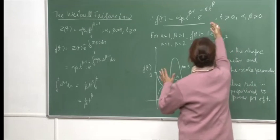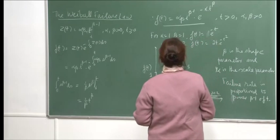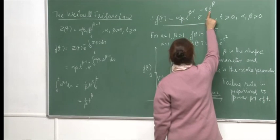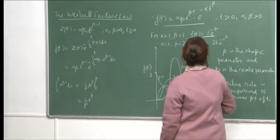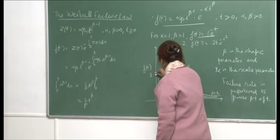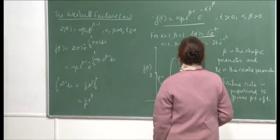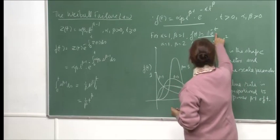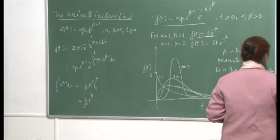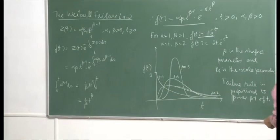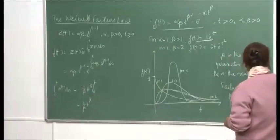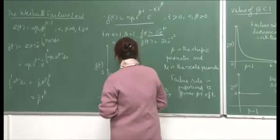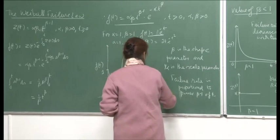When you put α = 1 and β = 1, the pdf becomes e^(−t), which is the exponential with parameter 1 — the constant failure rate case. When α = 1 and β = 2, z(t) = 2t, which is a linear function of t. The pdf becomes 2t × e^(−t²). For β = 1 the failure rate is constant at α; for β = 2 it increases linearly.